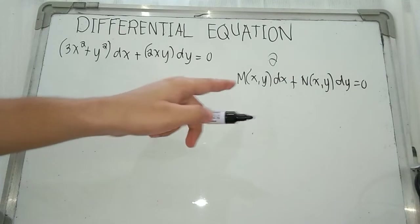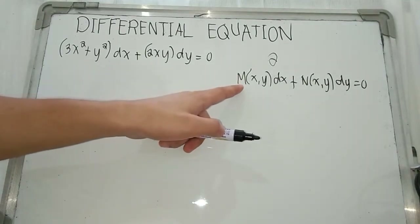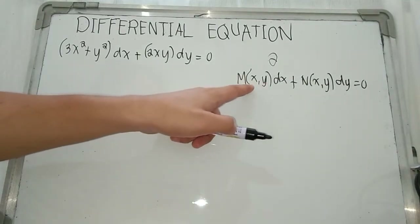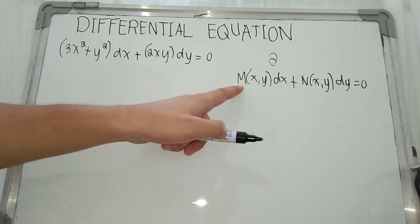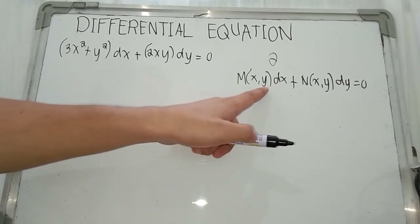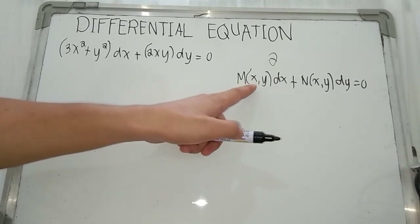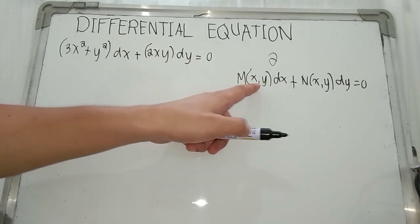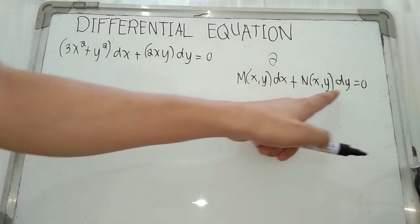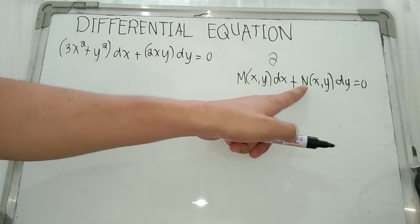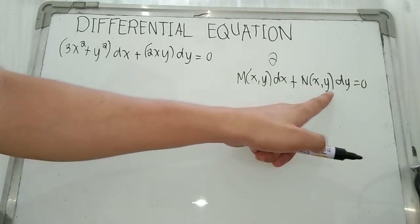Our M function has two variables x and y, so we are going to get the partial derivative of M with respect to y, treating x as a constant. While our N function is beside dy, and we are going to get the partial derivative of N with respect to x, treating y as a constant.